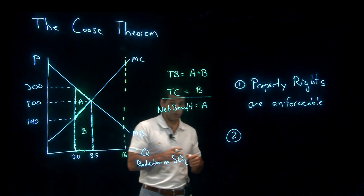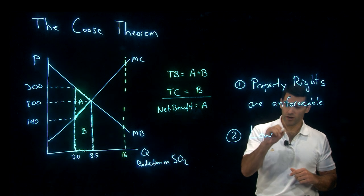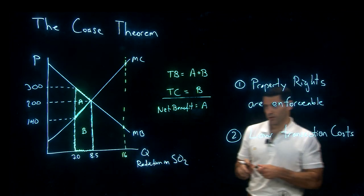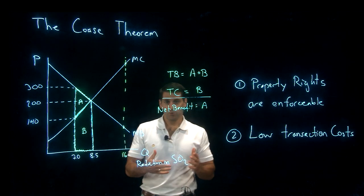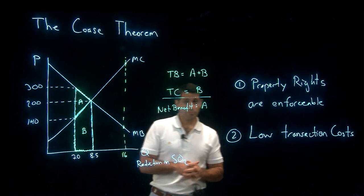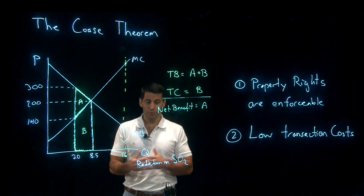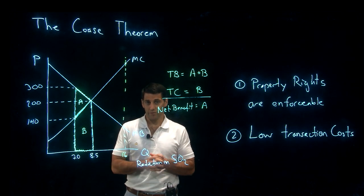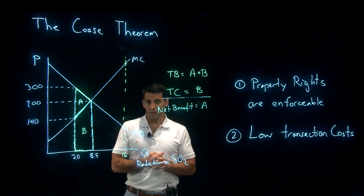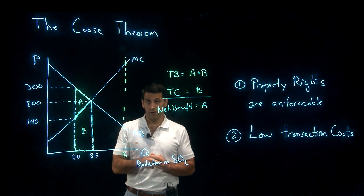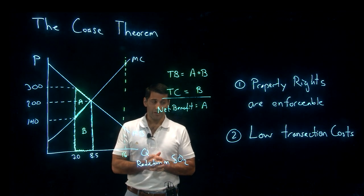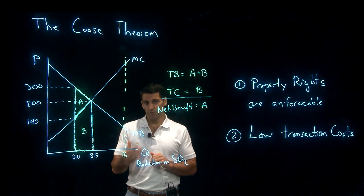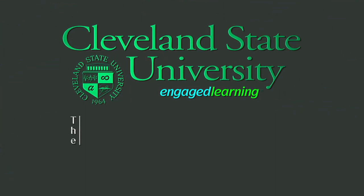The second condition is low transaction costs. Going back to the paper mill example: if the campground owners can't see how much pollution the paper mill is putting into the lake, they don't know if the terms of the agreement are being violated. Low transaction costs means both sides need to clearly and transparently see the amount of pollution being produced, and both parties need to understand the benefits and costs involved. If either of these two conditions doesn't hold, the Coase Theorem won't work.